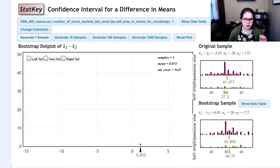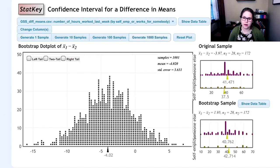In this case, my bootstrap difference in means was 0.85, so I put that dot on the plot. Maybe I'll just click the generate a thousand samples button here.